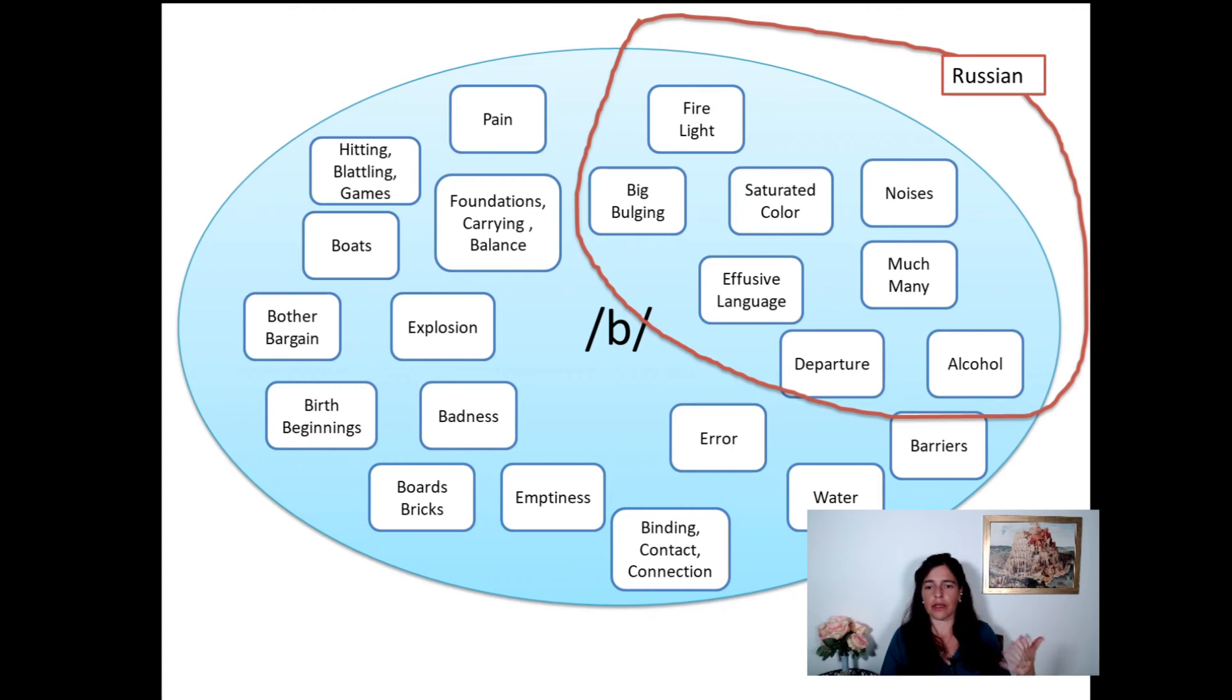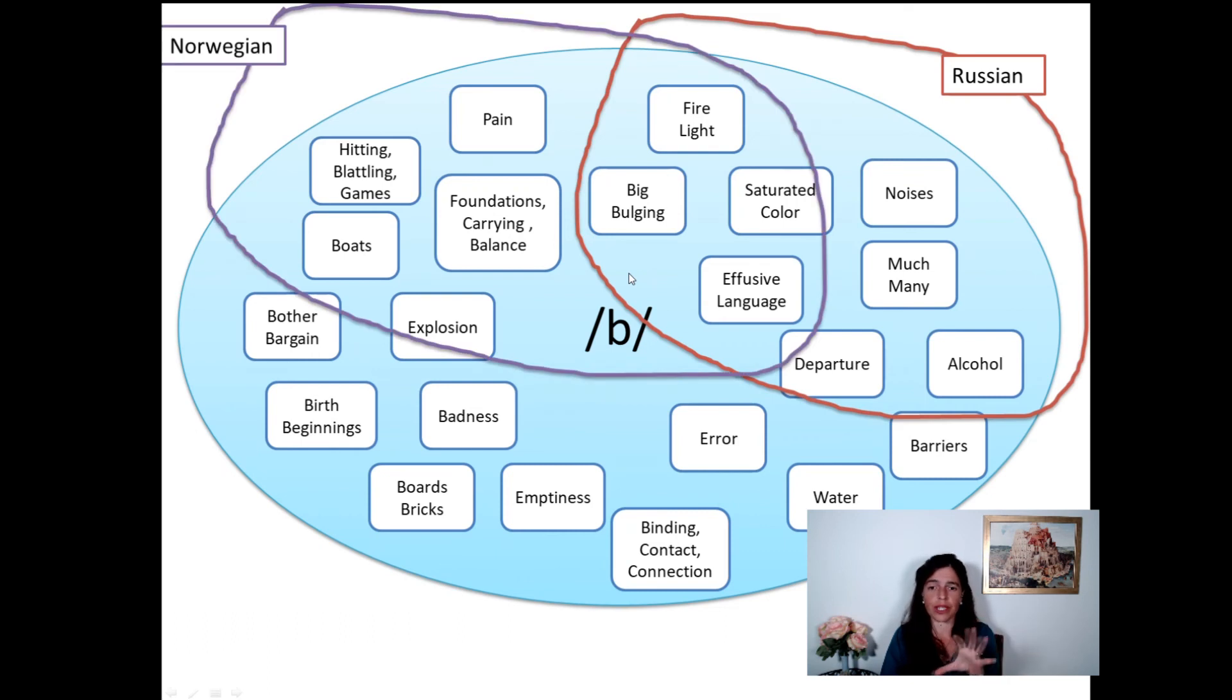So Russian, for example, this is not the actual analysis, this is just for a visual representation. Russian would use words starting with B to also represent big and bulging things, or fire or light, but for badness they chose, I don't know, the G sound. Okay, so each group, Norwegian would have done the same with another group of words. Each group will have been, its sound will have been divided by that.